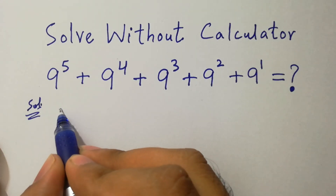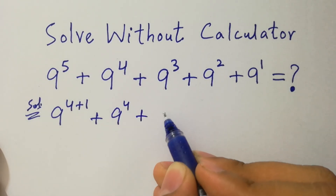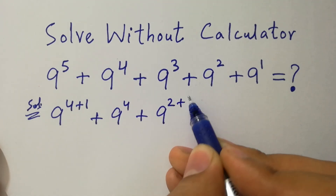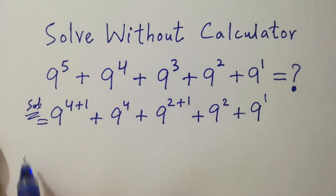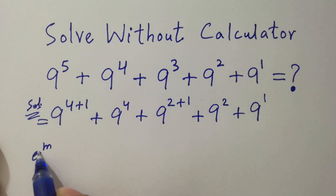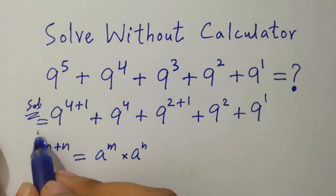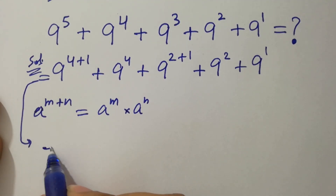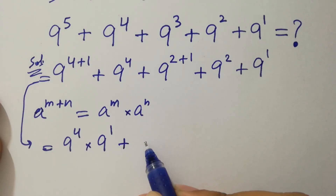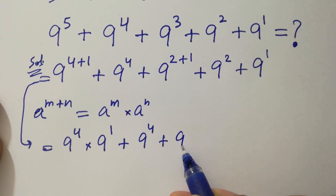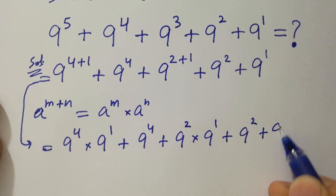Here, 9 to the power 5 is same as 9 to the power 4 plus 1, plus 9 to the power 4 as it is, plus 9 to the power 3 is same as 2 plus 1, plus 9 to the power 2, and 9 to the power 1 as it is. Next, as a to the power m plus n equals a to the power m times a to the power n, then it will be 9 to the power 4 times 9 to the power 1, plus 9 to the power 4, plus 9 to the power 4, times 9 to the power 2 times 9 to the power 1, plus 9 to the power 2, plus 9 as it is.